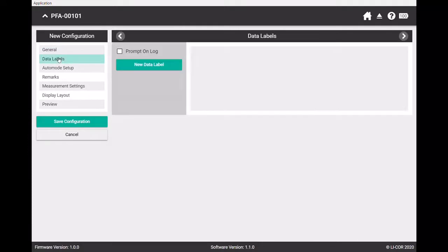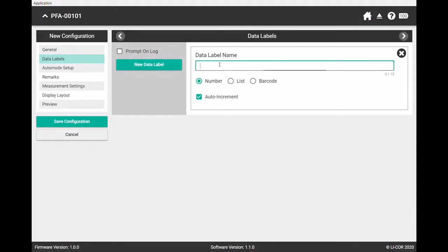We'll go down here to data labels where we are going to select a new data label. The first one here is we're going to select a barcode, and we need to give it a name. I'm going to give it treatment.